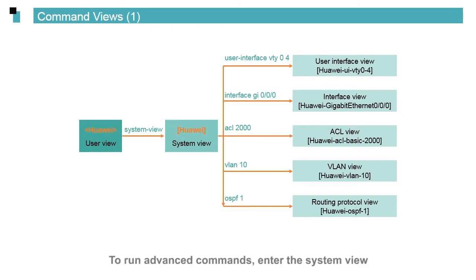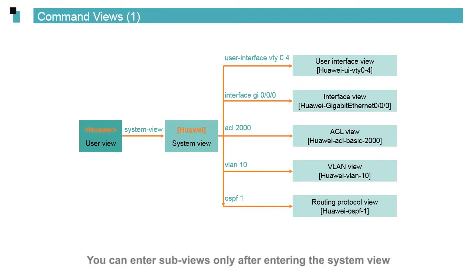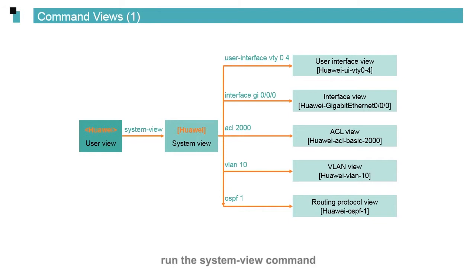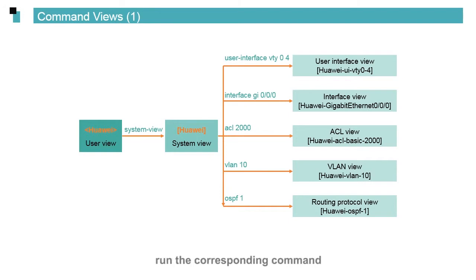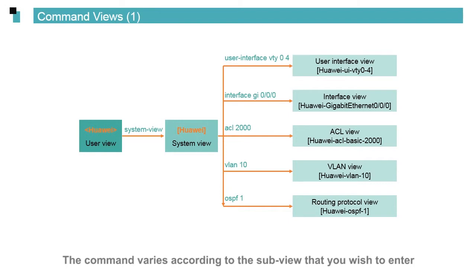To run advanced commands, enter the system view. You can enter subviews only after entering the system view. To enter the system view from the user view, run the system-view command. To enter a subview from the system view, run the corresponding command. The command varies according to the subview that you wish to enter.